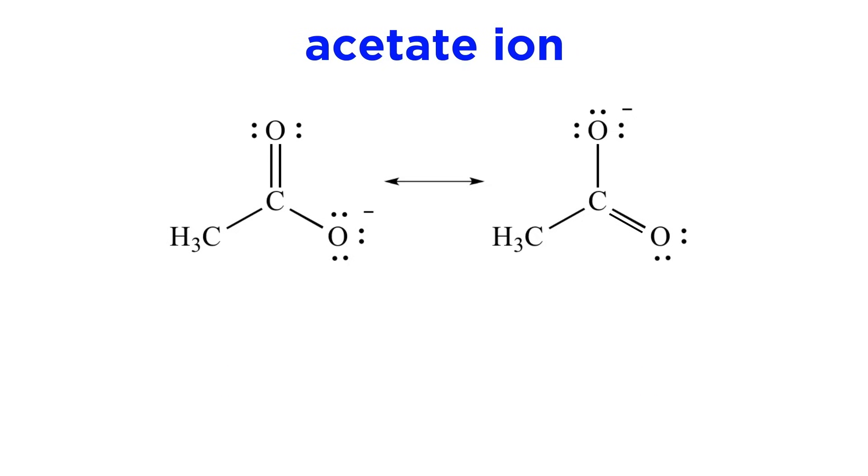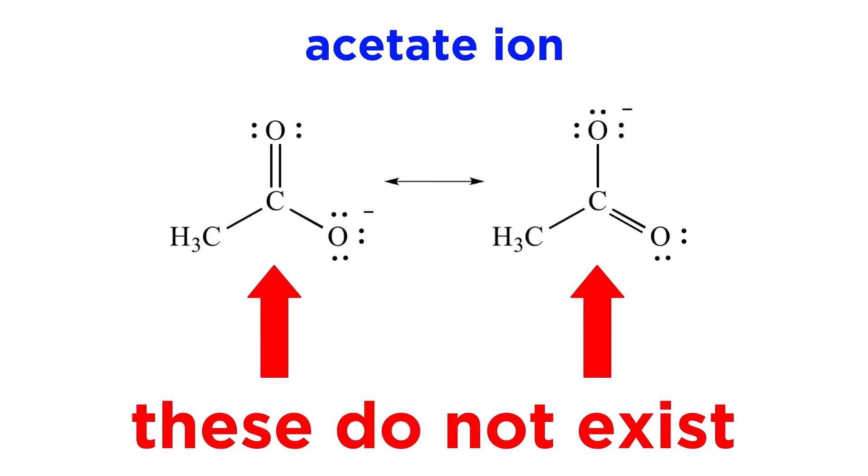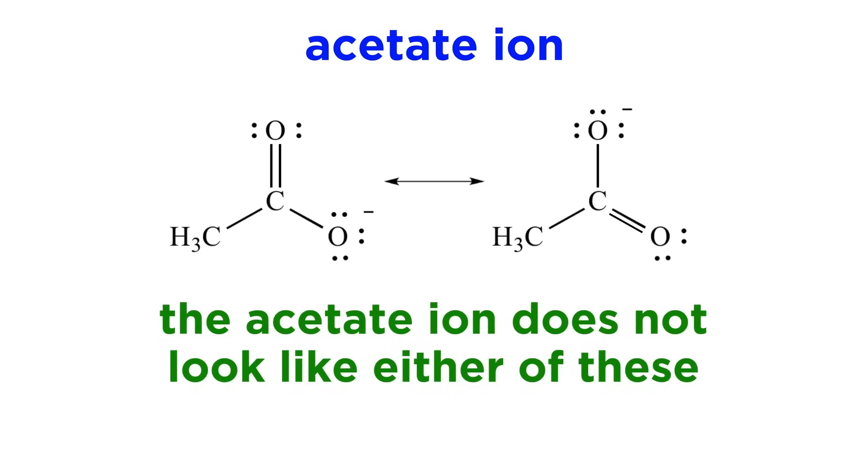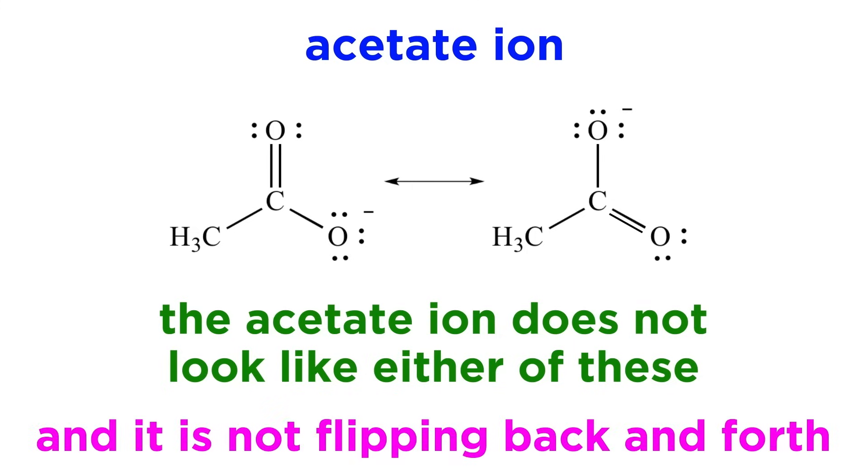Next, we must discuss the single most important thing to understand about resonance structures. Discrete resonance forms do not actually exist. The acetate ion does not look like one of these or the other, and it absolutely is not the case that it is flipping back and forth between them.